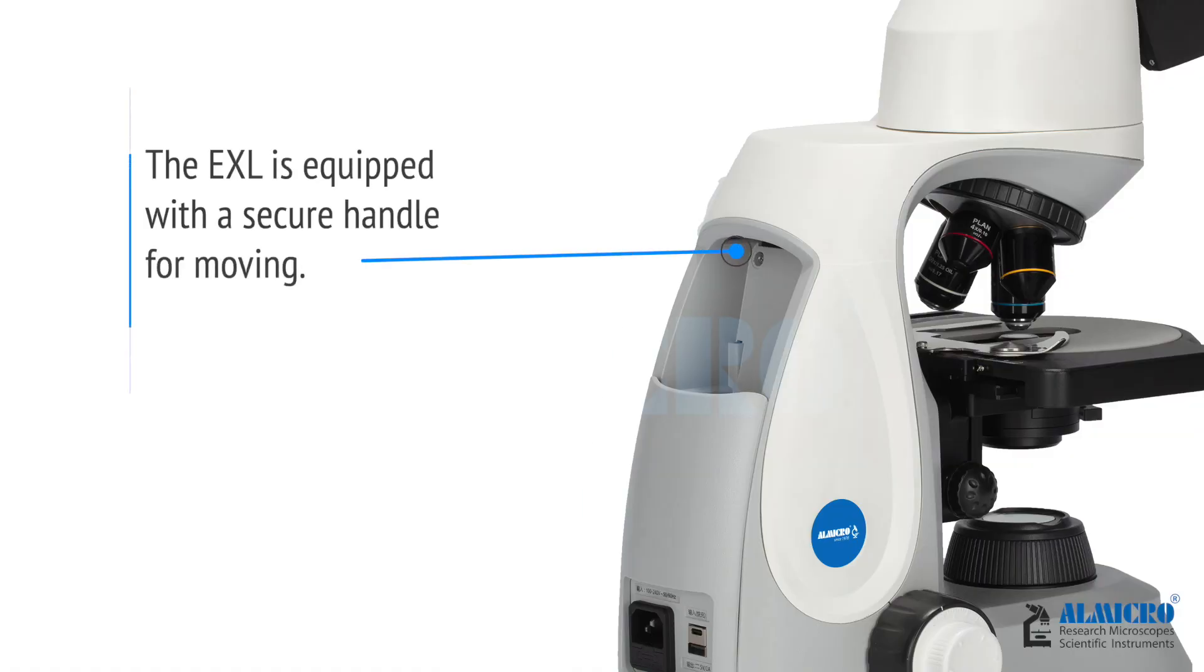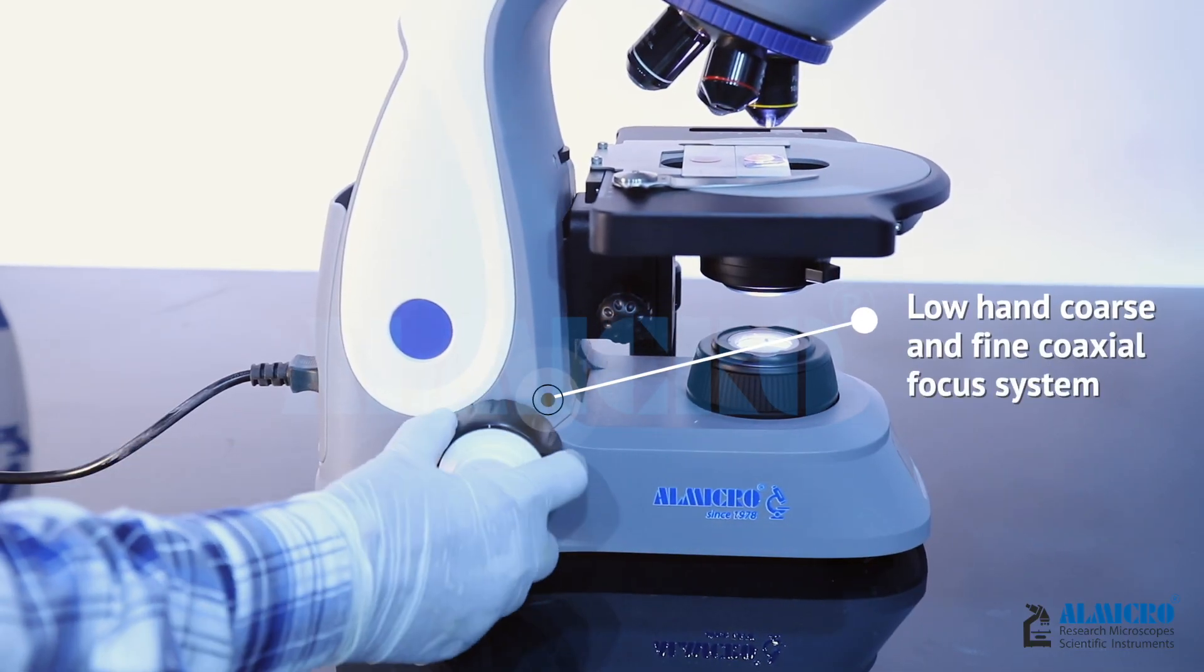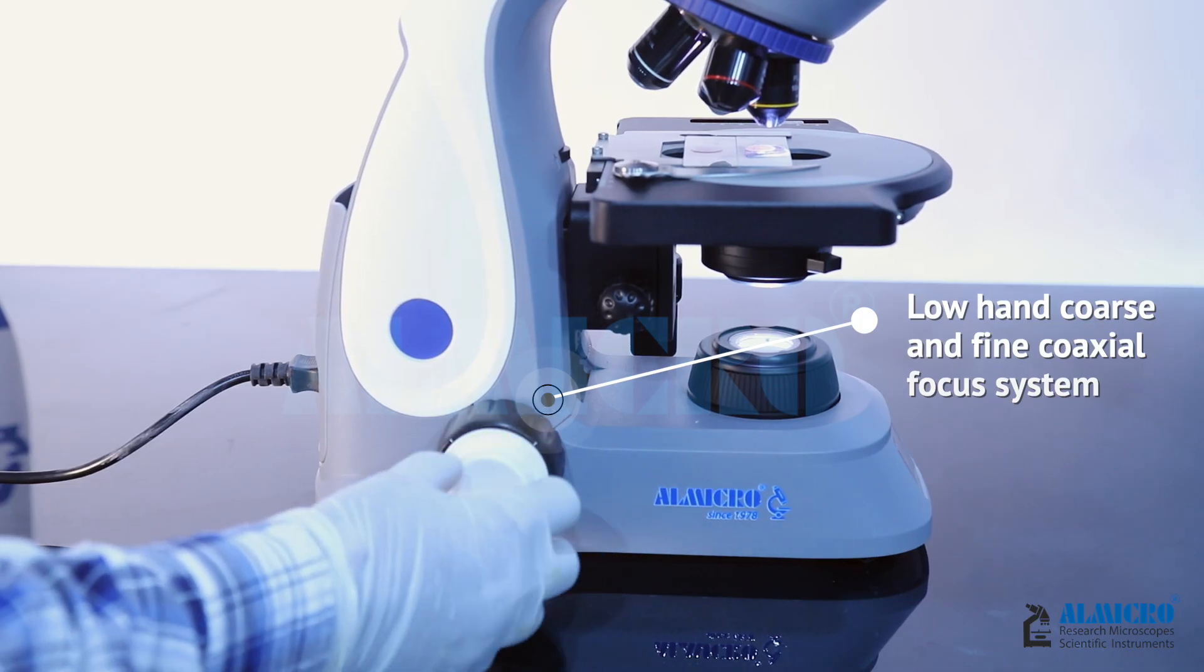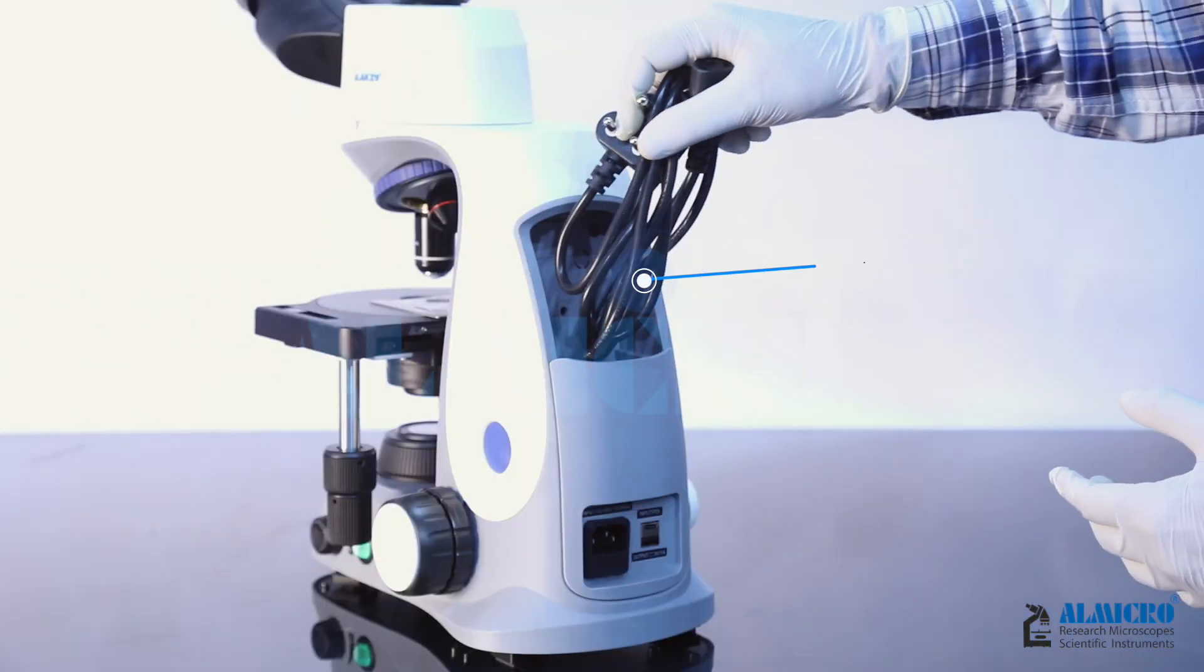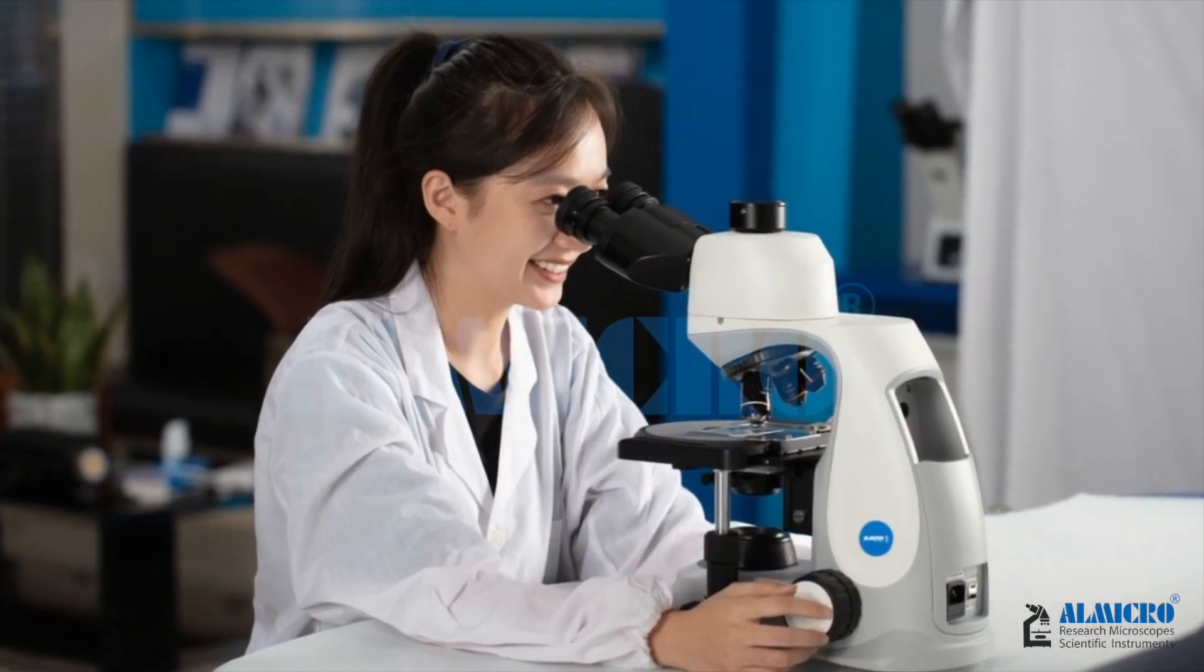The EXL is equipped with a secure handle for moving. Low hand coarse and fine coaxial focus system is ergonomically designed to give the user maximum comfort. There is a storage device at the back of the body to ensure cleanliness.